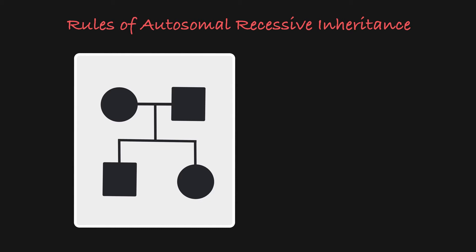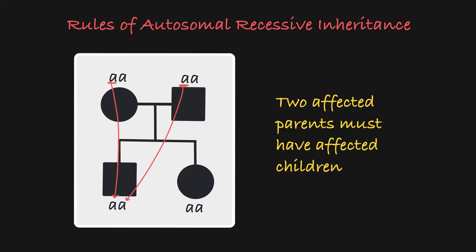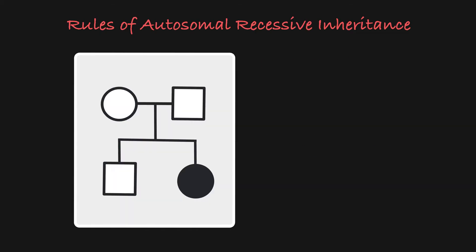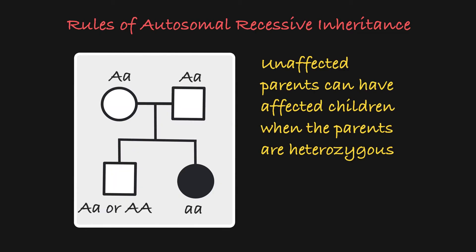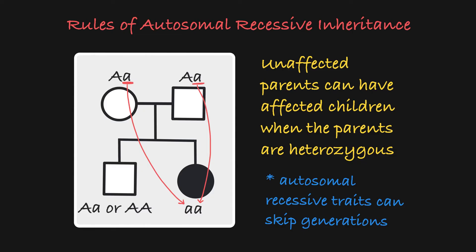Let's take a look at some pedigrees to learn the rules of autosomal recessive inheritance. When you have two affected parents, both parents must always pass on the recessive allele, and therefore all of their offspring must be affected as well. Furthermore, when you have two unaffected parents, they can still have affected children, because both parents might be heterozygous and therefore able to pass on either their recessive allele or the dominant allele to their children. This means that you will often see a trait of interest skipping a generation when dealing with an autosomal recessive trait.